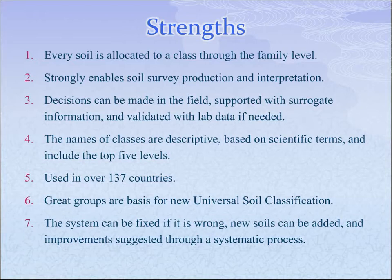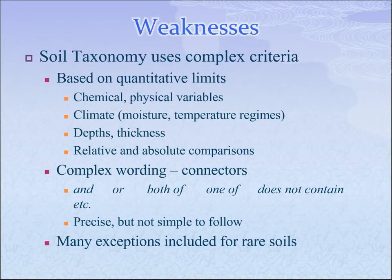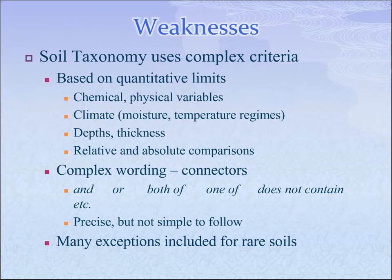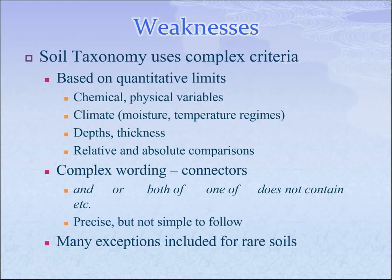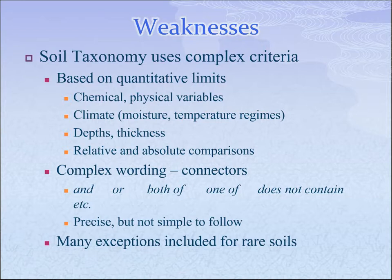But there are some weaknesses to soil taxonomy. The main one is it is incredibly complex. It has quantitative limits for things like percent base saturation, organic matter, and salinity. Various taxa have numeric values for quantification of factors within the soil, and these must occur within certain depths, adding additional complexity. You also have chemical and physical variables, climate variables such as moisture status and temperature regimes, depth and thickness requirements, and both relative and absolute comparisons.